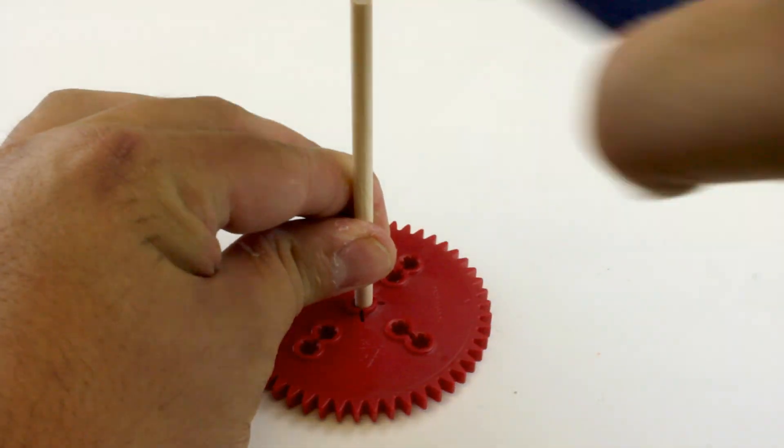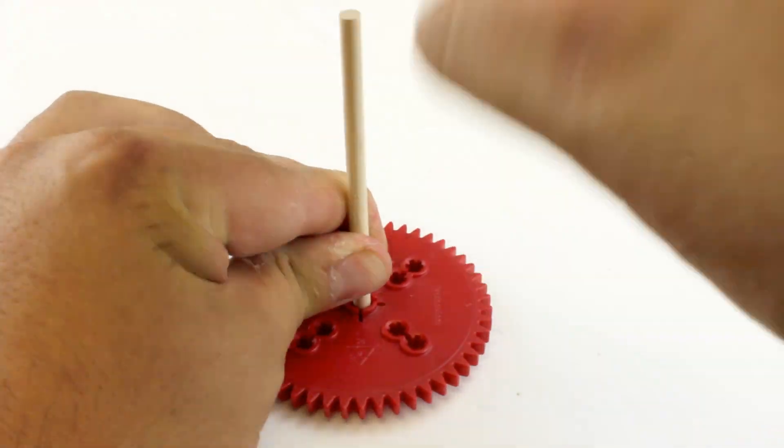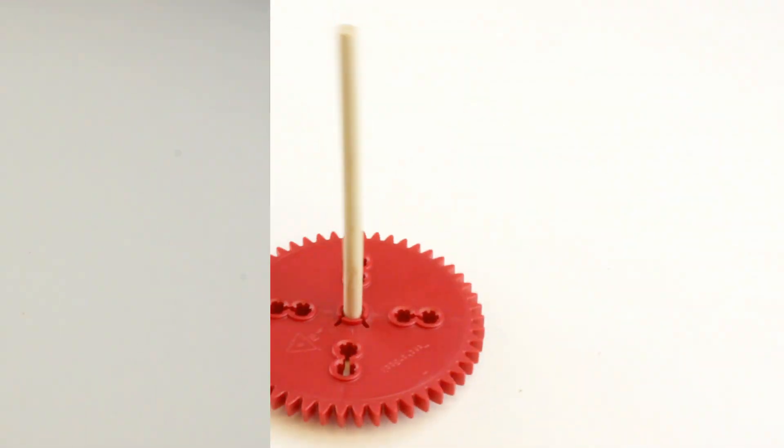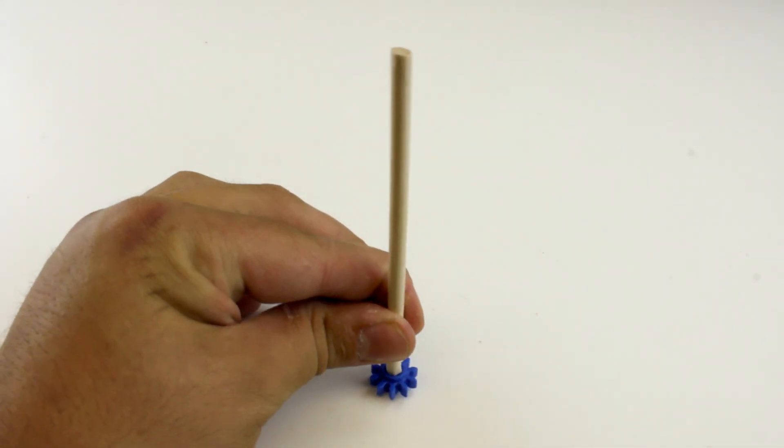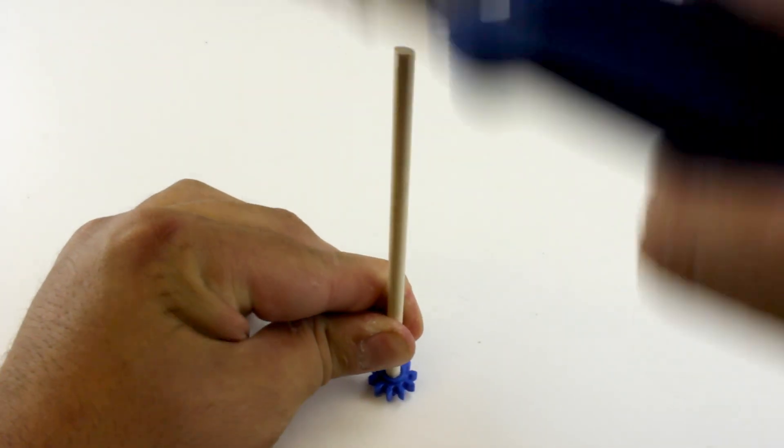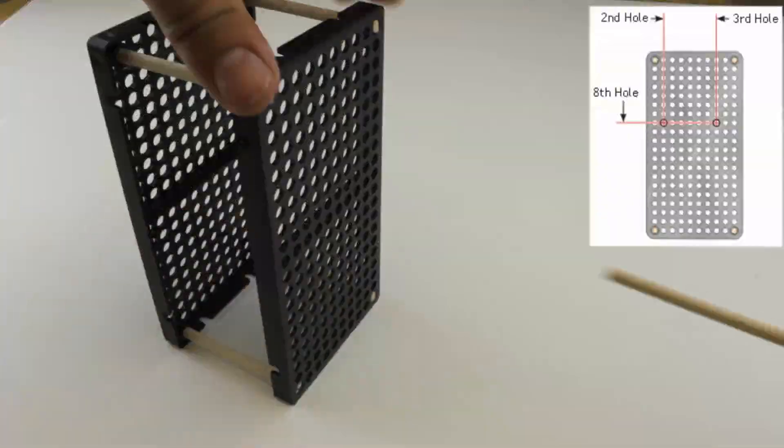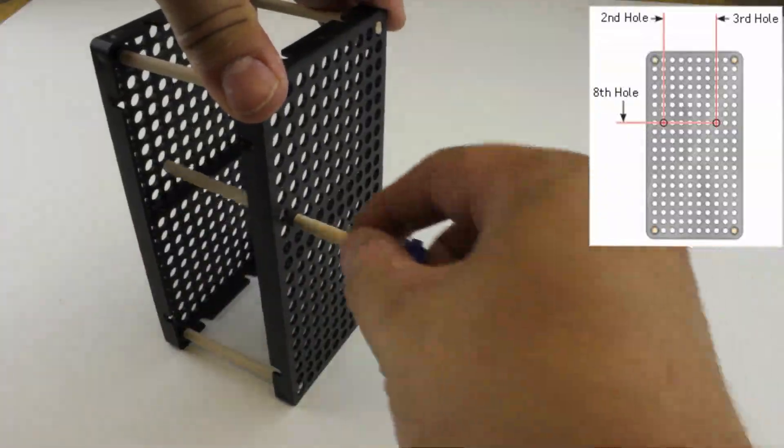Push or tap the 95mm dowel into the bigger gear. Then place the 130mm dowel into the smaller gear. Then place your gears with your dowels on through the holes marked above.